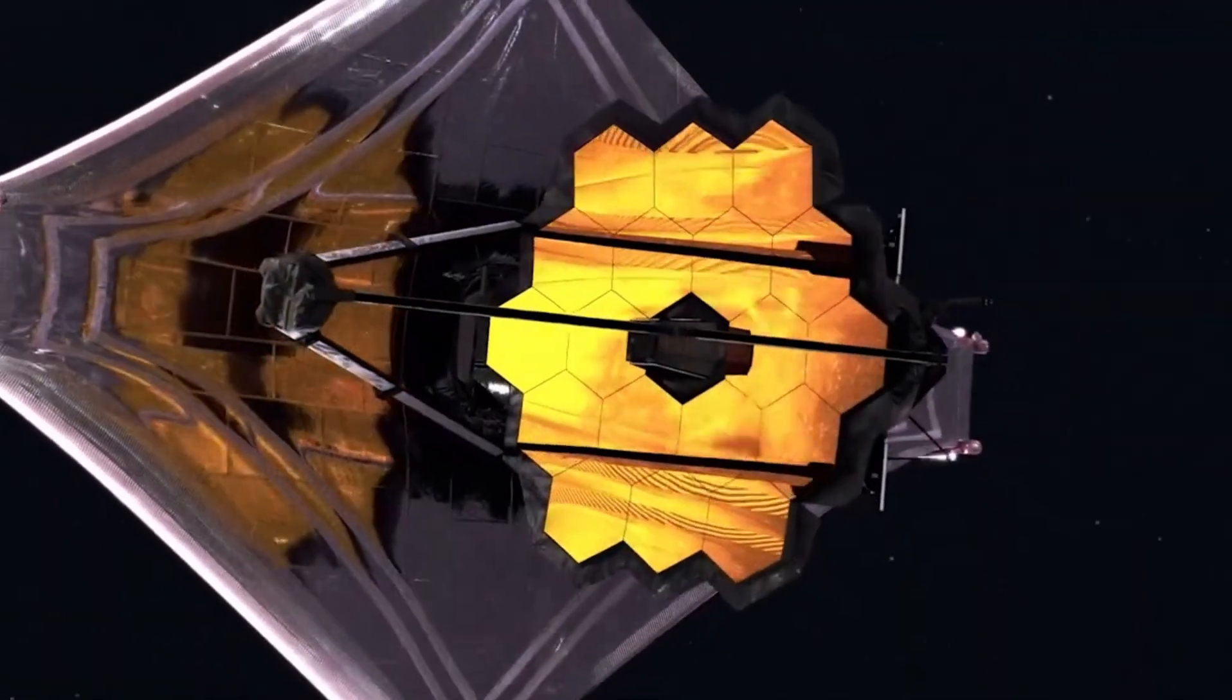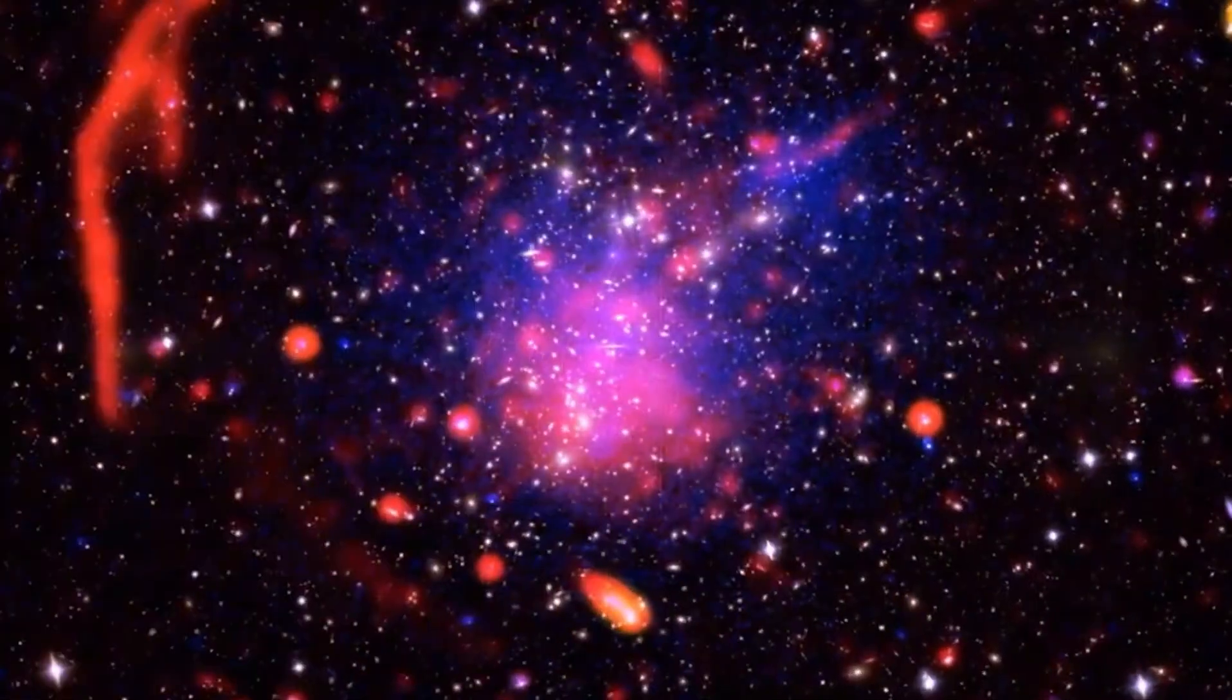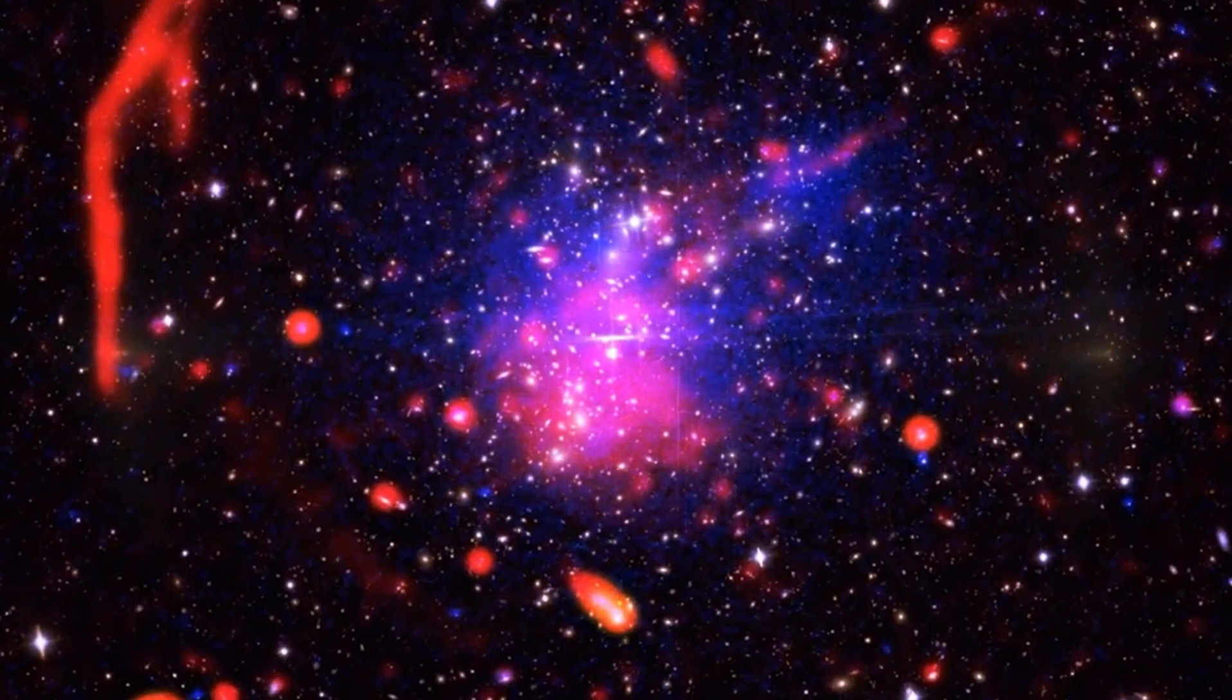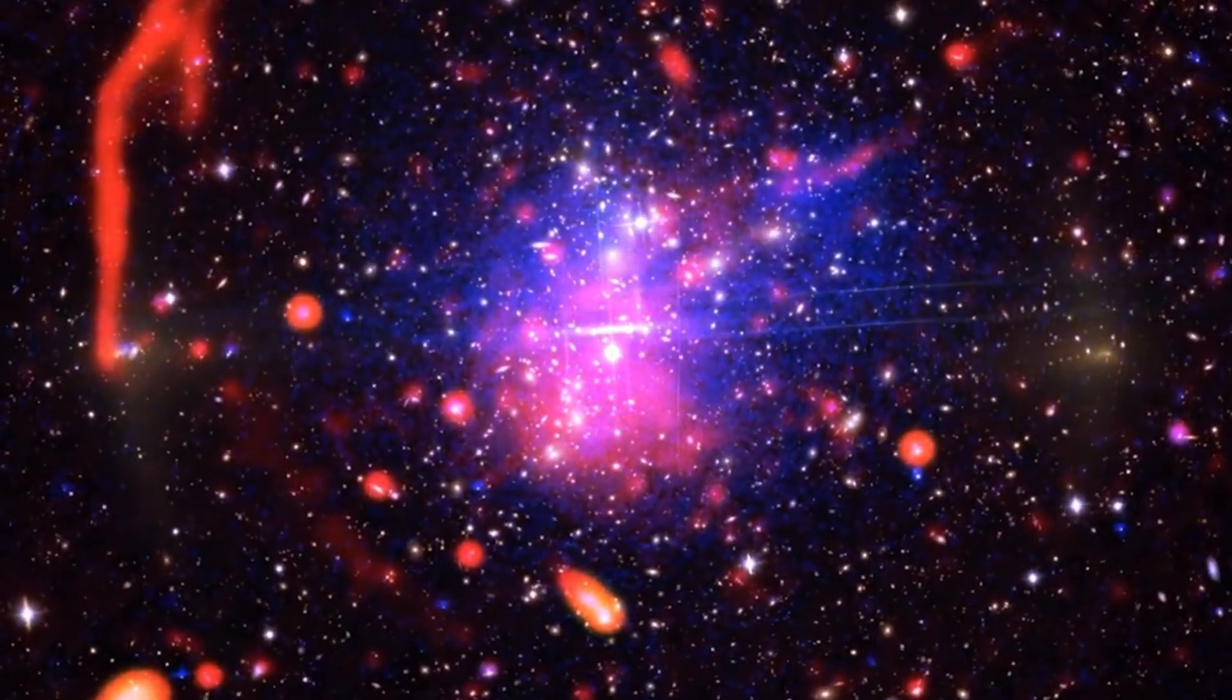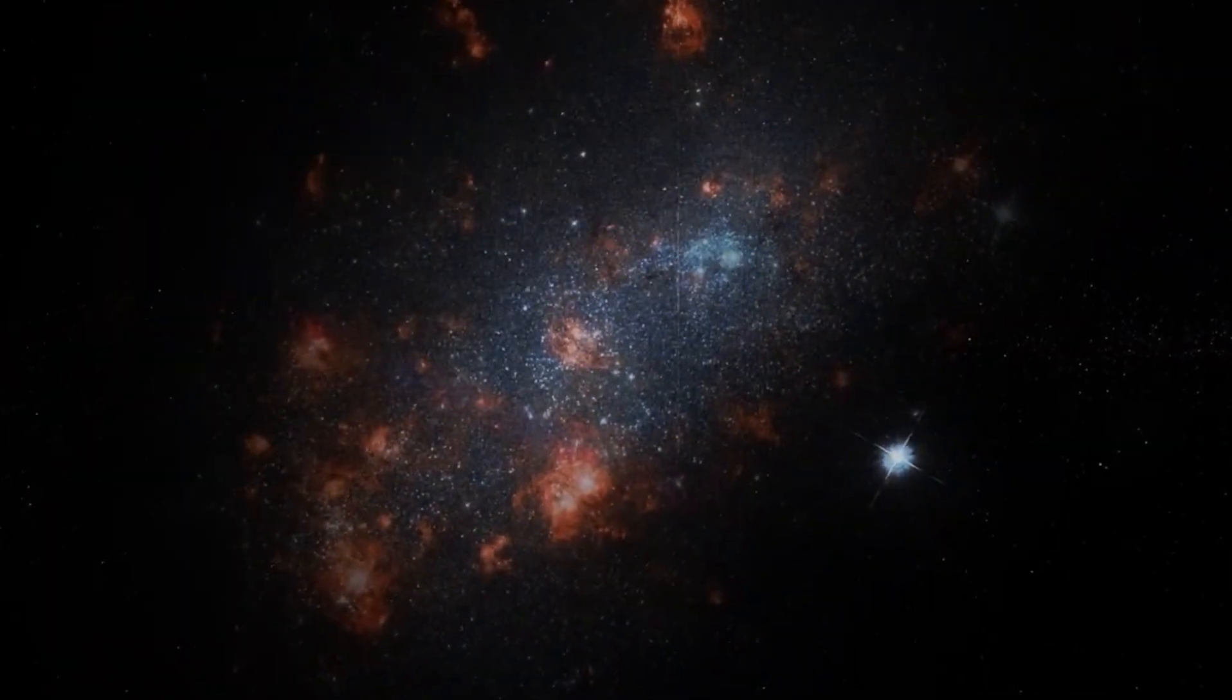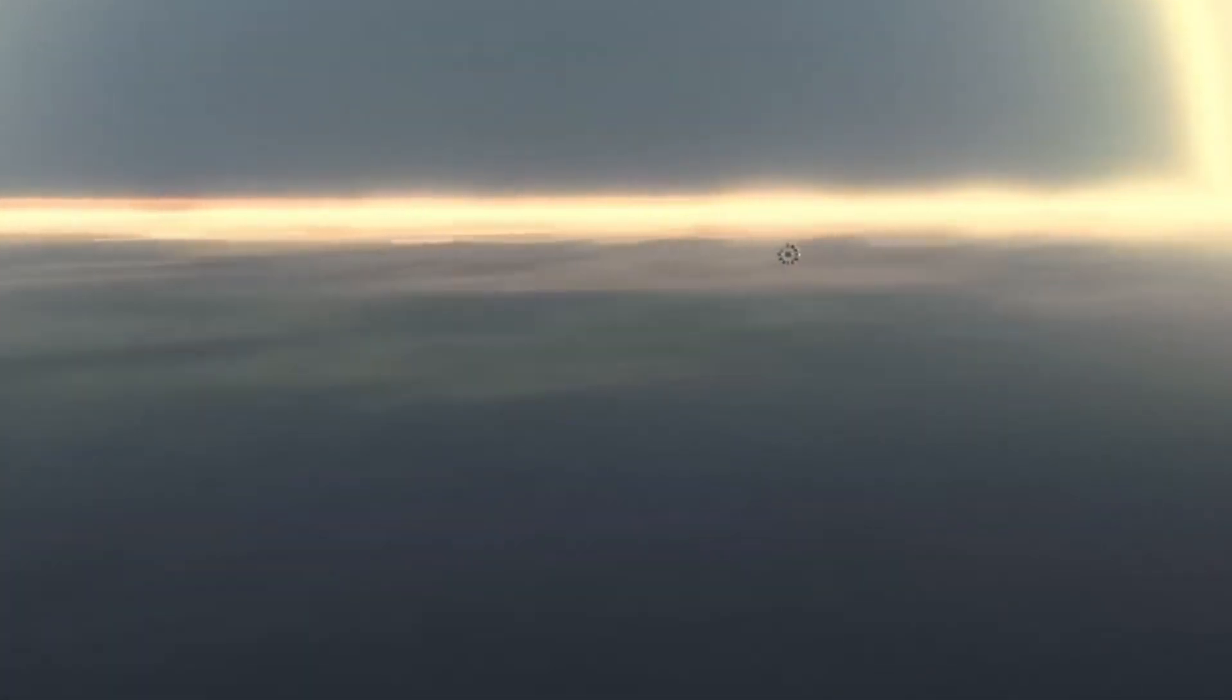According to the theory, dark matter particles started coming together under gravity, forming big clouds. These clouds then attracted other matter like gas, which eventually led to the formation of galaxies and groups of galaxies.